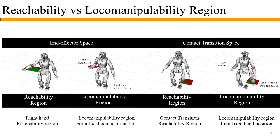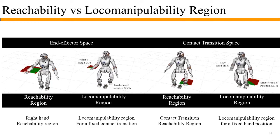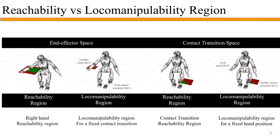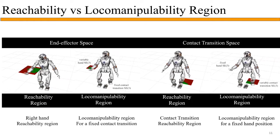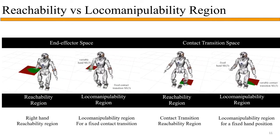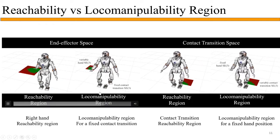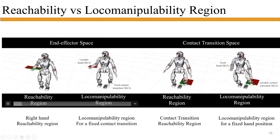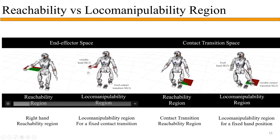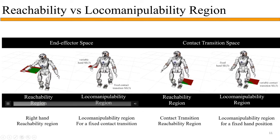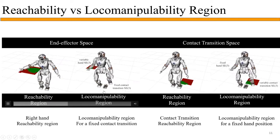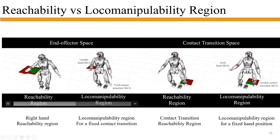Loco-manipulation regions extend the familiar concept of reachability, but with locomotion and manipulation constraints, making them a subset of traditional reachability regions. In the end-effector space, suppose we have to take a fixed contact transition — the loco-manipulation region is the area in which we can maintain this hand pose while performing this fixed contact transition.